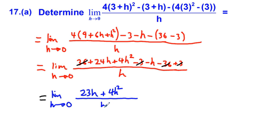This equals the limit as h approaches 0 of, since we have a common denominator, 23h over h plus 4h² over h. Simplifying further, h over h cancels out and h² over h cancels to be 4h.